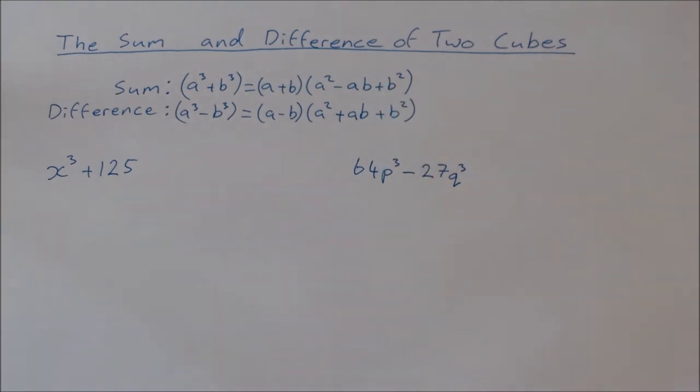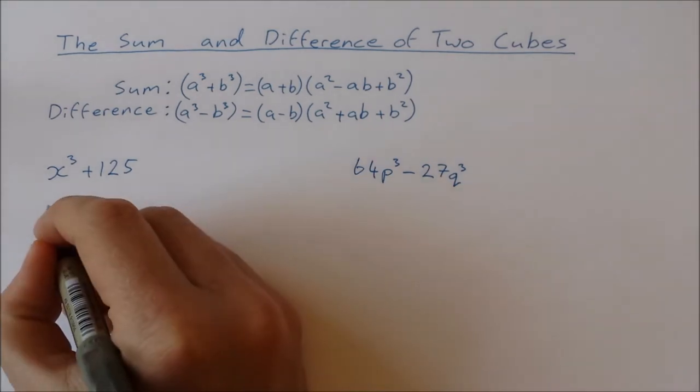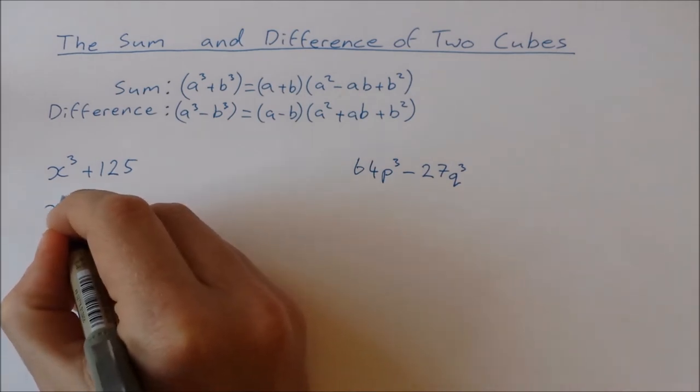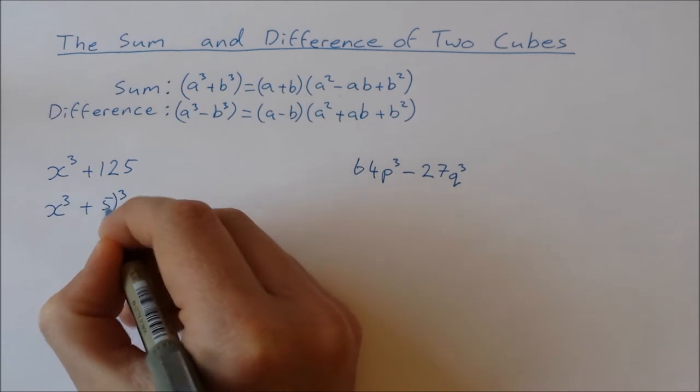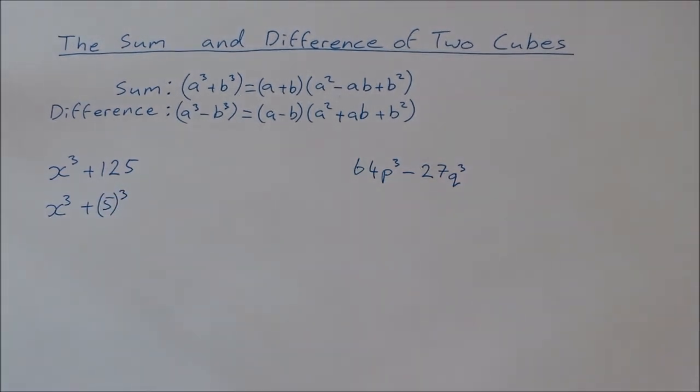Now let's take a look at two examples here. I have x cubed plus 125. When you look at that straight away, it doesn't really look like it's the sum or the difference of two cubes. It's actually the sum of two cubes. We can write this as x cubed plus 5 cubed. So 5 times 5 times 5 is 125.